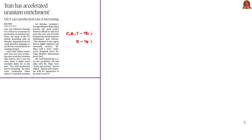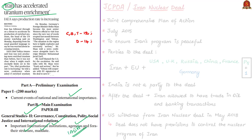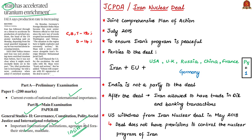The next news article is about uranium enrichment by Iran. This will be relevant in prelims under current events of international importance and in mains in GS paper 2 under important international institutions, agencies, structure and mandate — because we will be discussing the International Atomic Energy Agency. First, we will review the Iran nuclear deal, also called the Joint Comprehensive Plan of Action.